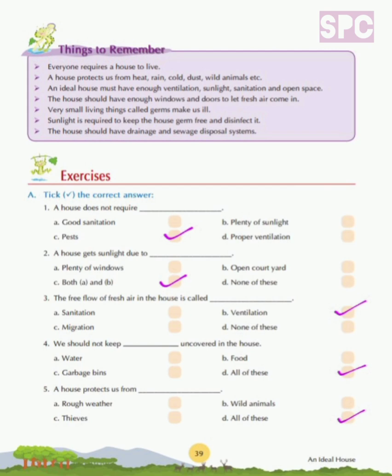Question 5: A house protects us from — rough weather, wild animals, thieves, or all of these. A house protects us from rough weather, wild animals and thieves as well. So here we will tick option D.